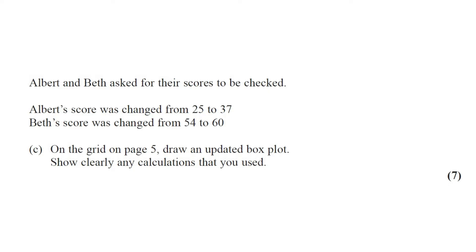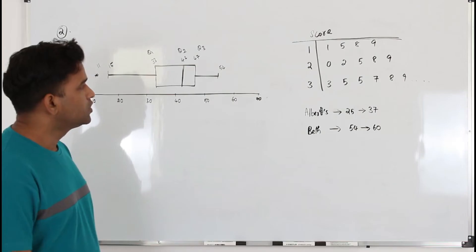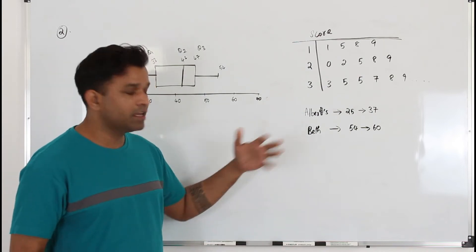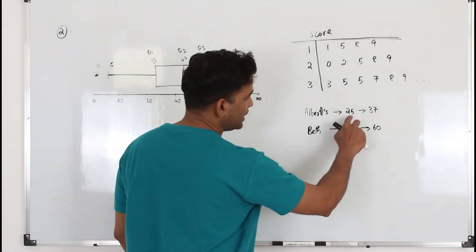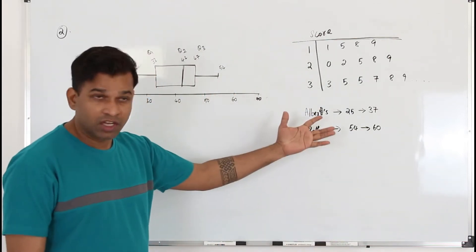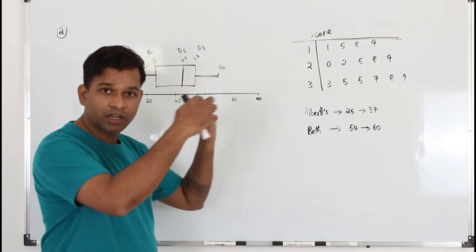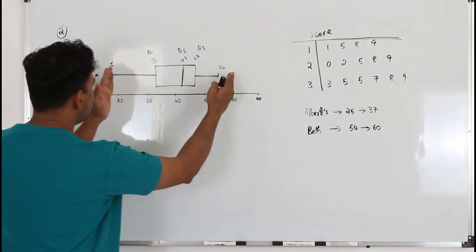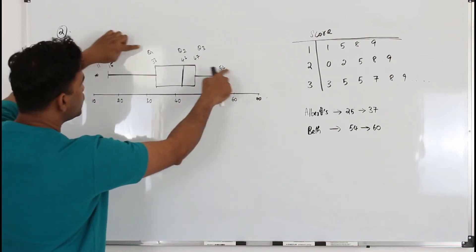Albert and Beth asked for their scores to be rechecked. Albert's score was changed from 25 to 37, and Beth's score was changed from 54 to 60. Part C: draw an updated box and whisker plot, showing clearly any calculations used. This question carries 7 marks. To draw the updated box and whisker plot we need: any outliers, the lowest value, the highest value, Q1, Q2, and Q3.